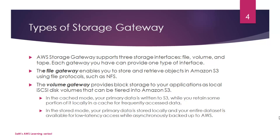To reiterate: File Gateway is for flat file storage — files are stored directly on S3. Data from your data center passes through the File Gateway and ends up in your S3 buckets. Volume Gateway is for block-based storage — you can store programs, operating systems, and similar workloads. Under Volume Gateway, Stored mode keeps primary data locally and backs it up to AWS storage, while Cache mode stores primary data directly to S3.